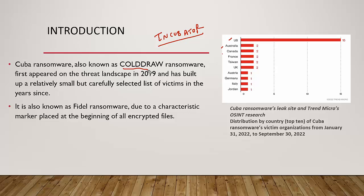It was initially flagged by the FBI in December 2022. The agency stated that the hacker group had compromised at least 49 entities across five critical infrastructure sectors, including financial, government, healthcare, manufacturing, and information technology. It is also known as FIDDEL ransomware due to a characteristic marker placed at the beginning of all encrypted files. According to a 2022 Trend Micro report, they primarily targeted US companies, followed by Australia, Canada, and France.